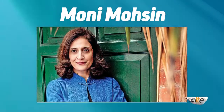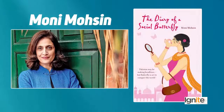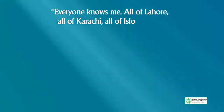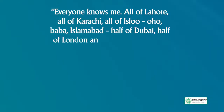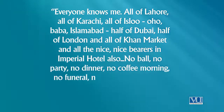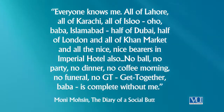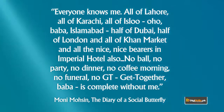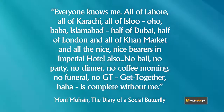Another example is Moni Mohsen, a Pakistani writer, in The Diary of a Social Butterfly. The main character is a socialite. Her voice reads: 'Everyone knows me. All of Lahore, all of Karachi, all of Islamabad, half of Dubai, half of London, and all of Khan market and all the nice-nice bearers in Imperial Hotel also. No wedding, no party, no dinner, no coffee morning, no funeral, no GT — get together — is complete without me.' Notice the mix of Urdu and English words, the ellipses, and the run-on sentences — all used to characterize a not-very-intelligent, status-obsessed personality.